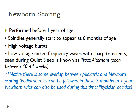Newborn scoring is slightly different. The scoring rules we just discussed apply to patients two months old and older. For patients younger than two months, newborn scoring rules apply. Spindles generally start to appear at six months of age. There are high-voltage bursts and low-voltage mixed-frequency waves with sharp transients seen during quiet sleep — we call this trace alternant. Note there is some overlap: pediatric rules can be followed from two months to one year, and newborn rules can be used any time during that period up to one year old. The physician interpreting the study will make that decision.